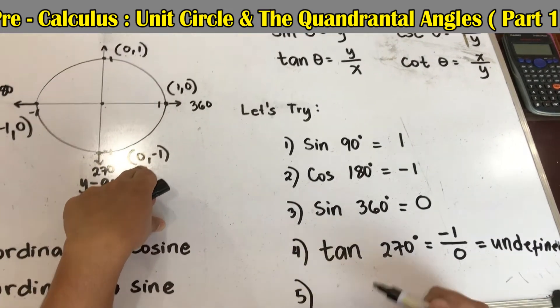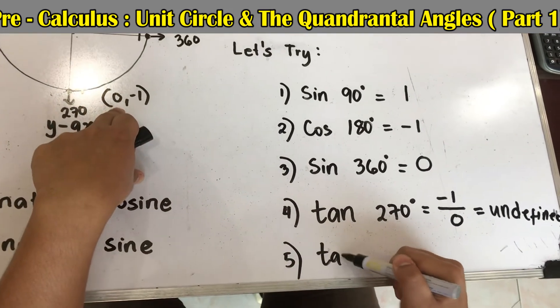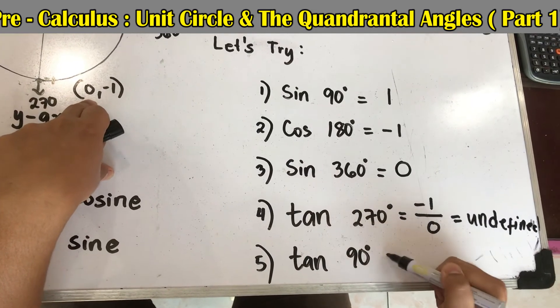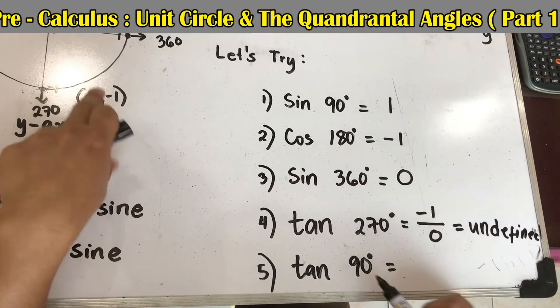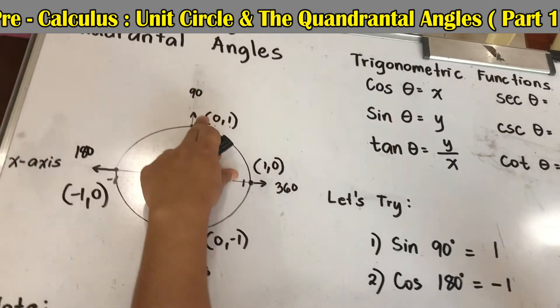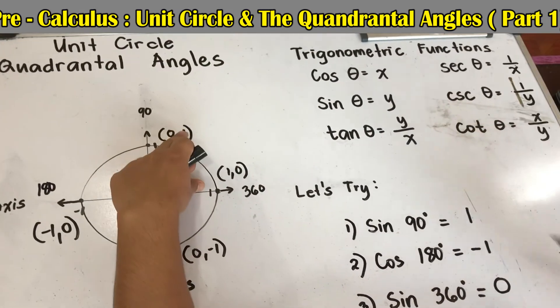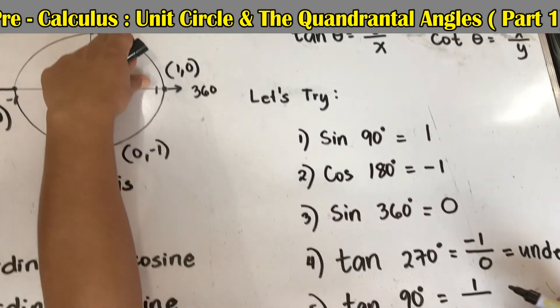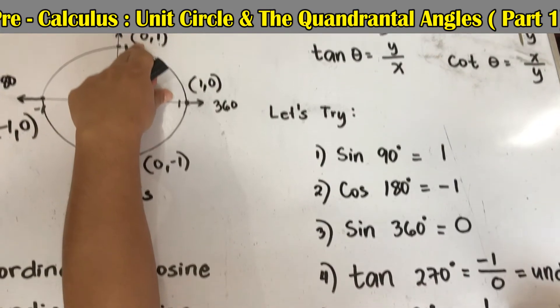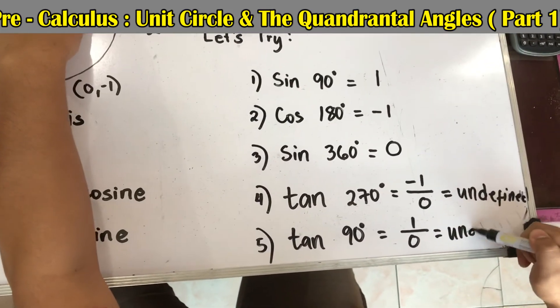Last, let's have tangent 90 degrees. 90 degrees, tangent is y over x. So 1 over 0. 1 over 0 is still undefined.